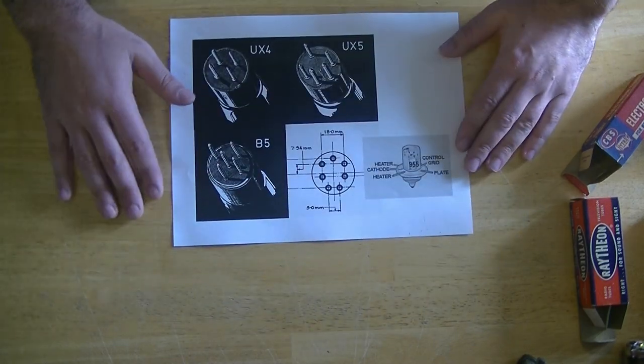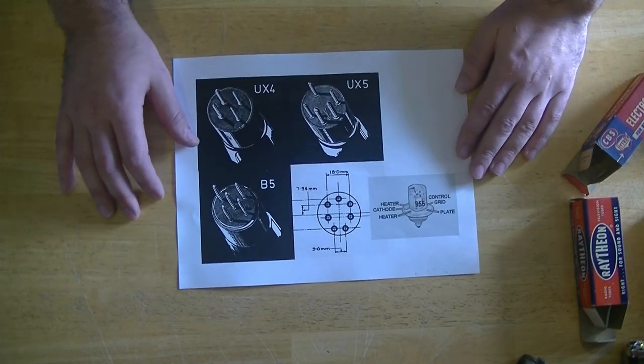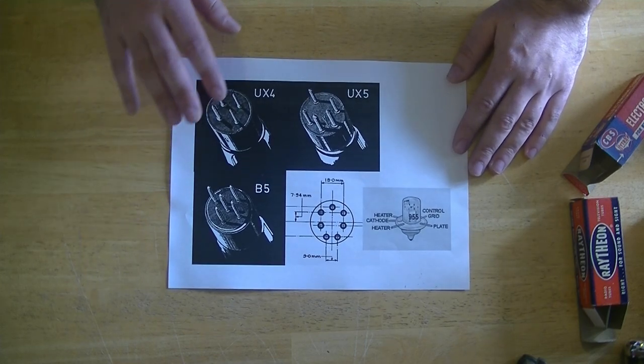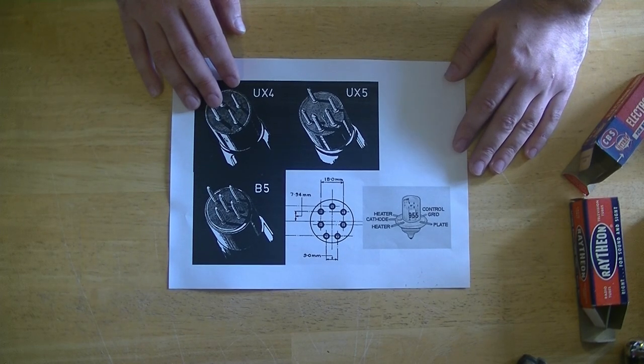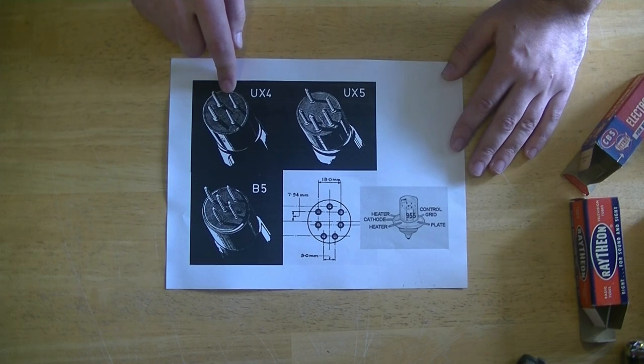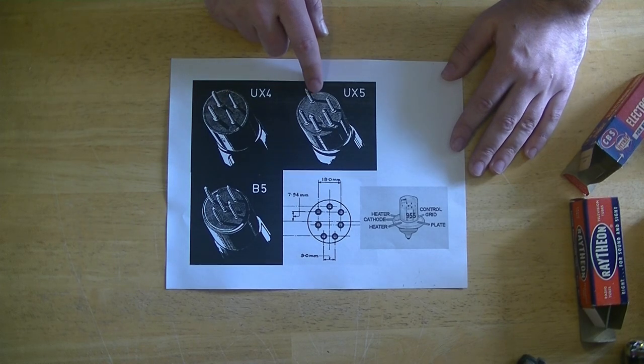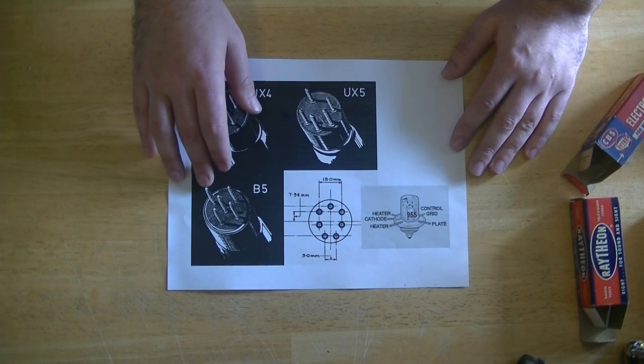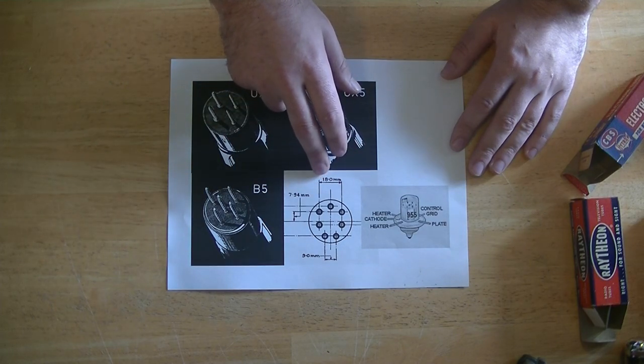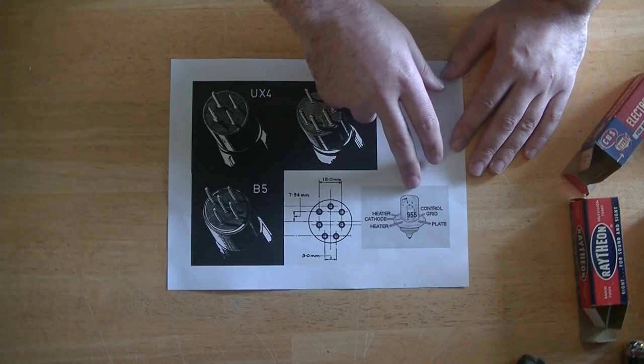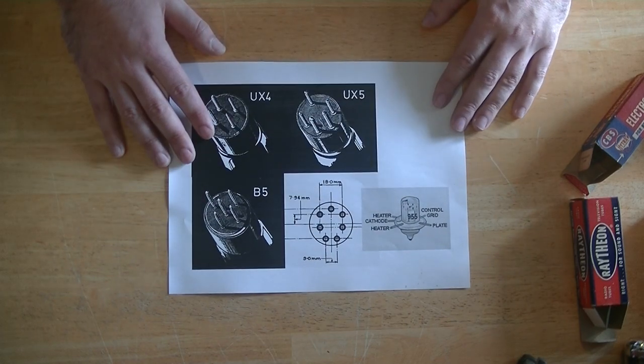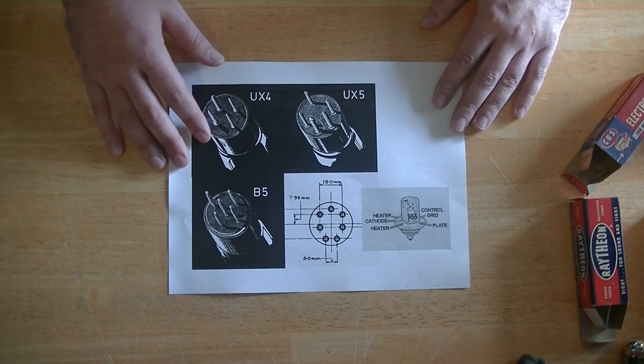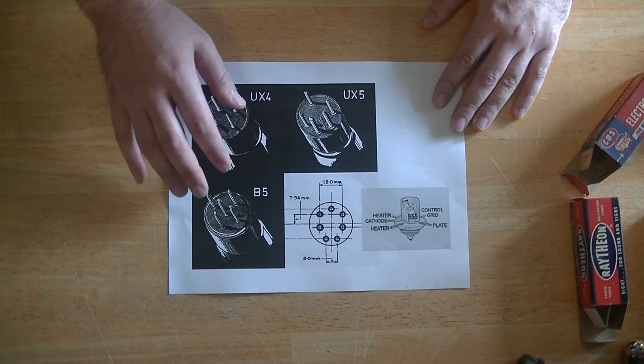You can see these are some of the common bases of the time. Here we've got the UX4, the UX5, the B5, and this is a B7, and this is an acorn base. One of the things that you'll notice about all these designs is that they don't have center posts on them.